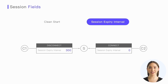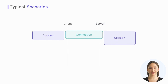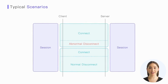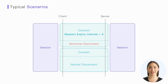We can use these two fields very flexibly to meet our needs in actual scenarios. For example, if the client loses its session state due to a restart, it can specify Clean Start as 1 during a new connection, indicating the desire to start a new session. Or, when we want the server to retain the client's session state in case of abnormal disconnections due to network fluctuations, but end the session when the client gracefully disconnects after completing its business, we can set the Session Expiry Interval to a value greater than 0 when connecting, and then update it to 0 when disconnecting.